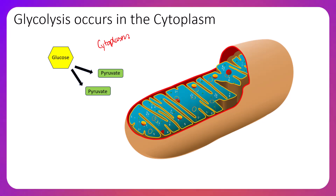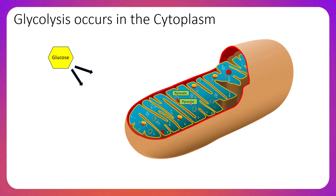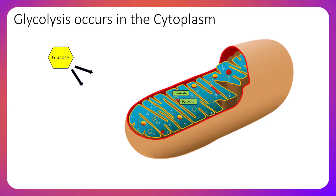To recap: we take a glucose and convert it into two individual pyruvates. Those pyruvates then move into the mitochondria where they will join the Krebs cycle, occurring in the matrix — the inner fluid of the mitochondria — where they will be further broken down into high-energy electron carriers called NADH and FADH2. Once that FADH2 and NADH is made, it heads to the cristae, or inner mitochondrial membrane, where the ETC is located to pump out large amounts of ATP. More details on the Krebs cycle and ETC are coming in a later video.